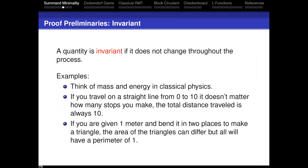I want to start introducing the various ingredients for the proof. Some of these are pretty standard, especially if you do math competitions; others really haven't been covered in the undergraduate curriculum — things that fall through the cracks. The first is an invariant — a quantity that doesn't change. Mass and energy in classical physics is a great example. If you travel in a straight line, the total distance traveled is independent of how many stops you made. If you take a meter and bend it to make a triangle, the area can differ but the perimeter is always one.